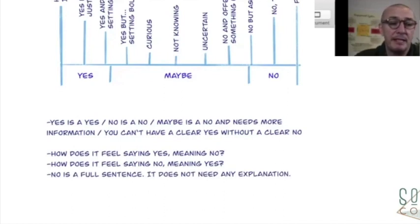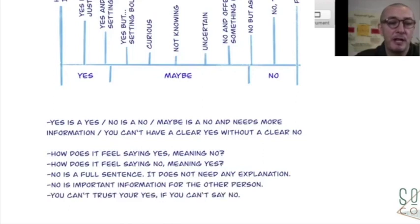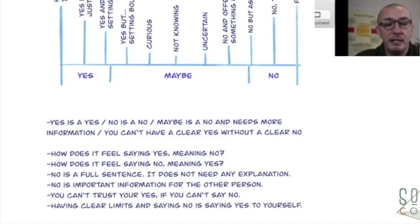No is a full sentence, doesn't need any explanation. It's important information for the other person. You can't trust your yes if you can't say no. Having clear limits and saying no is saying yes to yourself.